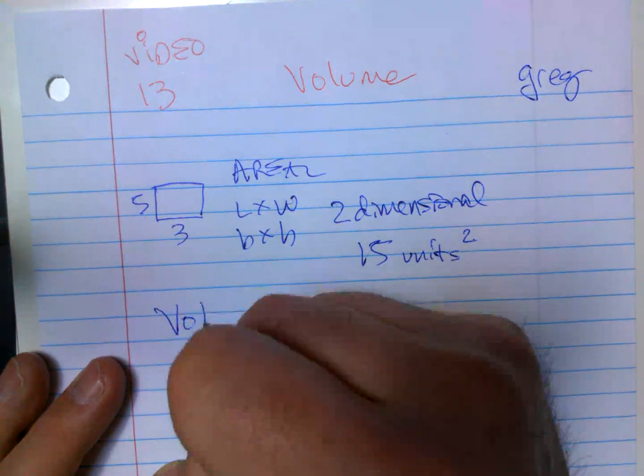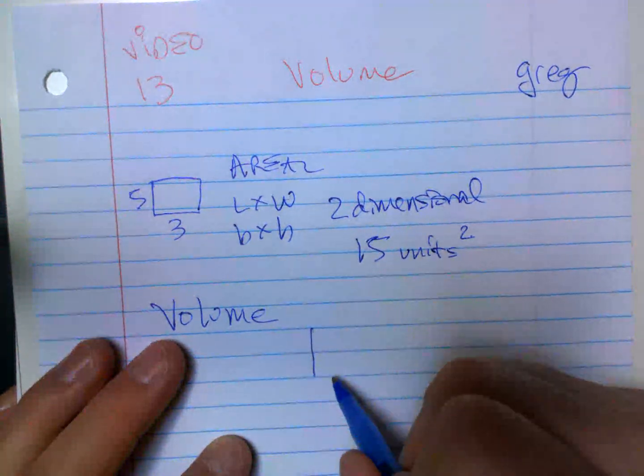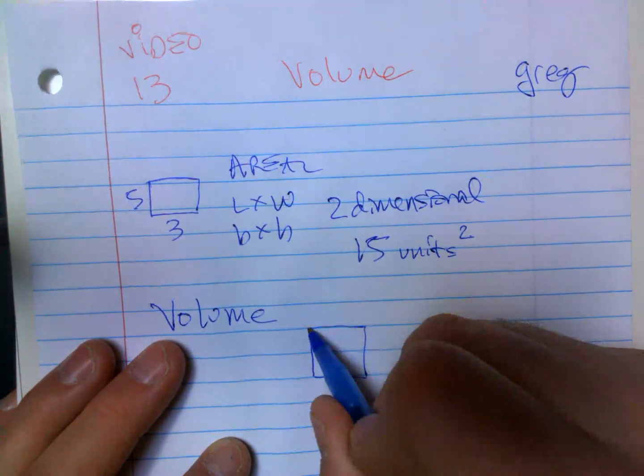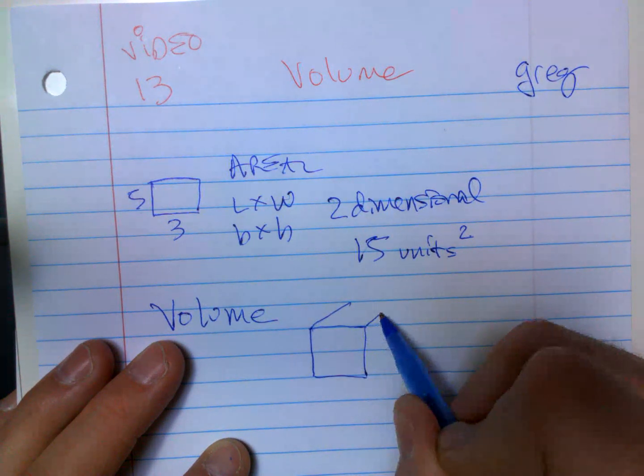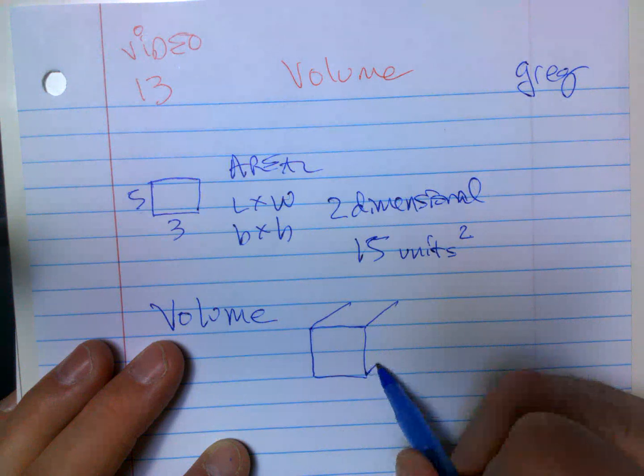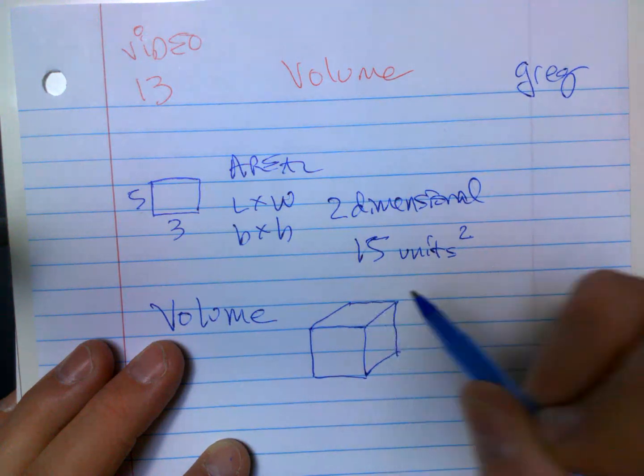But when you do volume, it's three-dimensional like a cube. I'm going to draw a square. I'm going to try to go 45-degree angle, 45-degree angle, 45-degree angle. Then you go straight down.